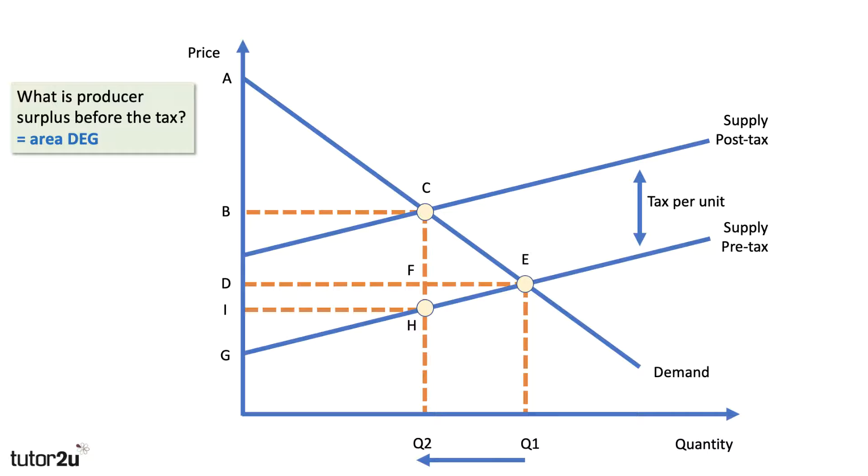By the way, G, on the left-hand side there, is the minimum price the producer receives, needs to get to supply to the market. So initially, before the tax, producer surplus is area D, E, G.